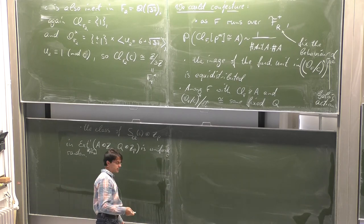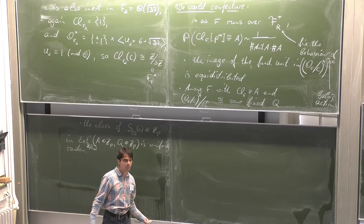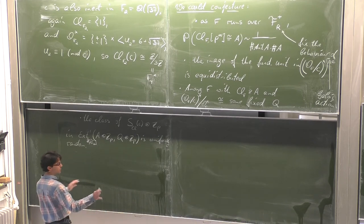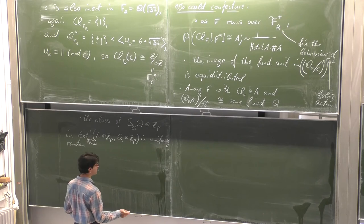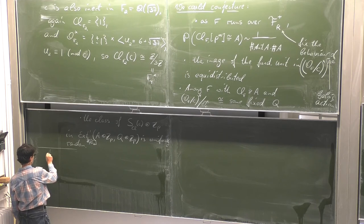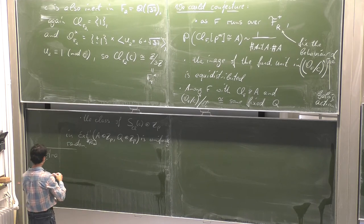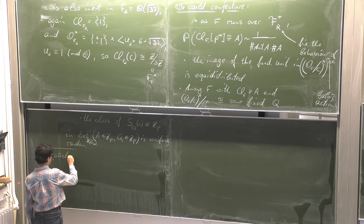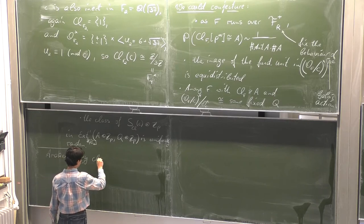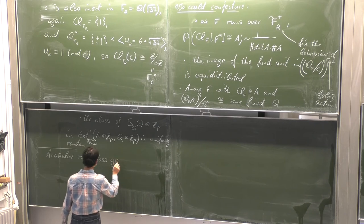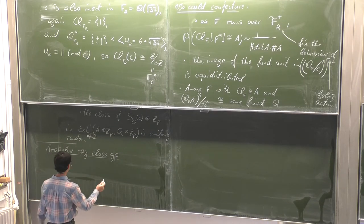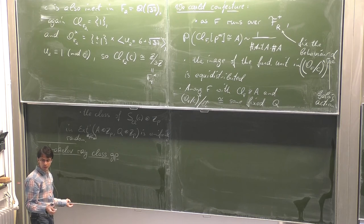My main aim of this talk is to advertise the following definition. This is Friday morning, we've had four very filling days of talks, there will be no proofs in this talk, there will be one definition, and if you don't remember anything else, this is the one thing I want you to take away. It's a definition of an object we call the Arakelov ray class group — a beautiful object that we haven't seen treated in the literature.